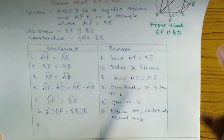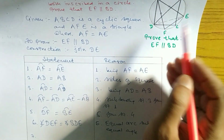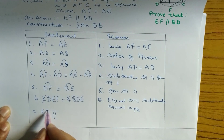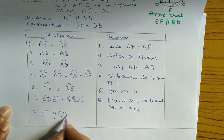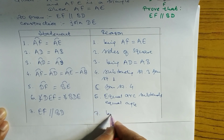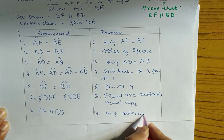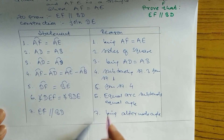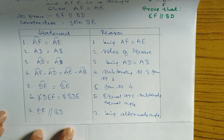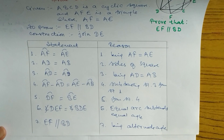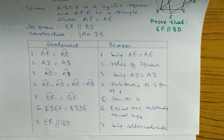Since the two angles are equal, and these are alternate angles, we can write EF is parallel to BD. The reason is: alternate angles are equal. This completes the proof. If you are new, please subscribe to my channel, like and share. Thanks for watching till the end.